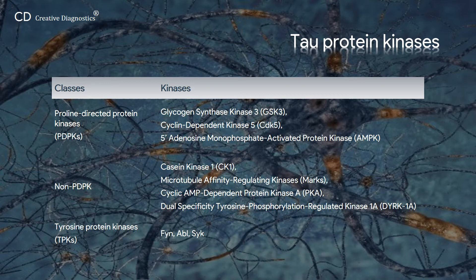Additionally, several phosphatases dephosphorylate Tau, including protein phosphatase 1, 2A, and 5.